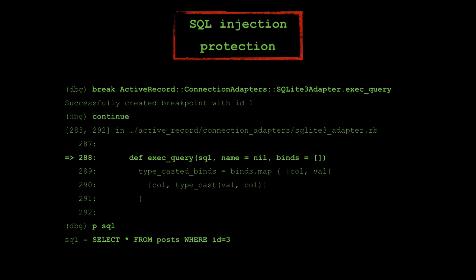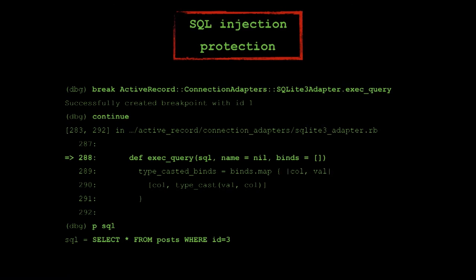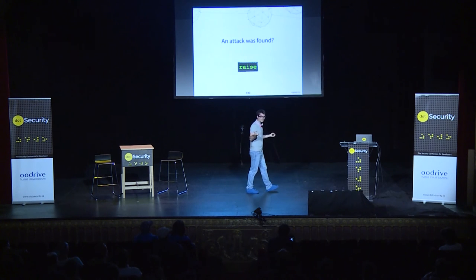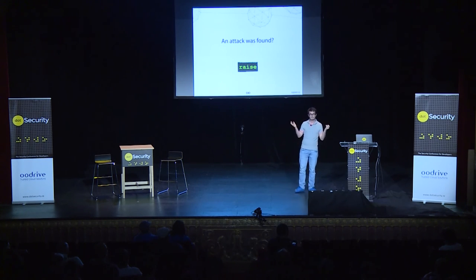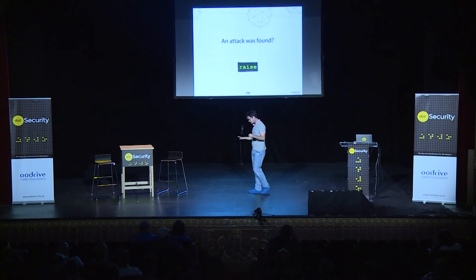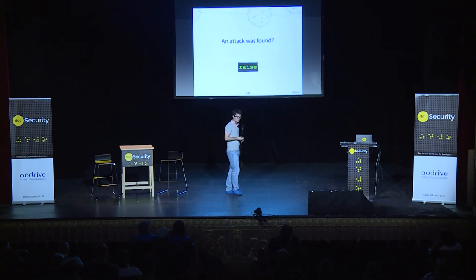You can hook into any SQL API. This is the lowest level API for SQL in a Ruby on Rails application. If you get there, you can access the SQL query just before it is sent from your application to the database server. Once you have the query, you're able to correlate it with the user parameters and understand that an injection is being performed. If you detect that, you can easily raise an exception — the malicious HTTP request is blocked and everything is fine. You've protected the server.